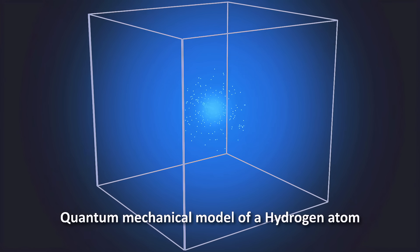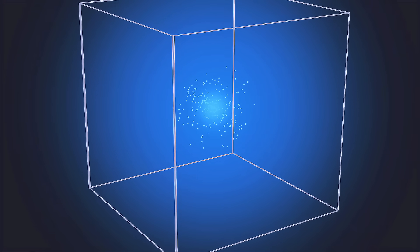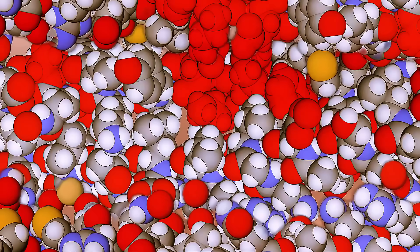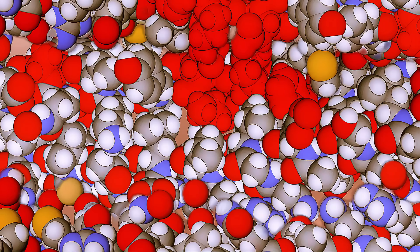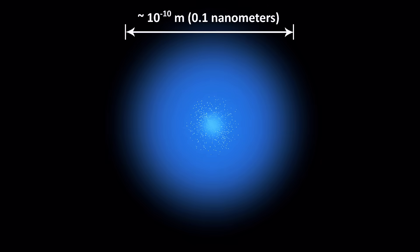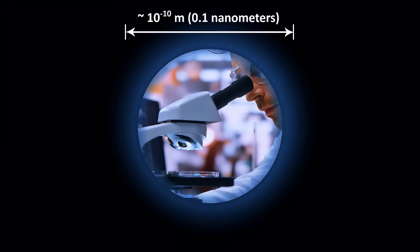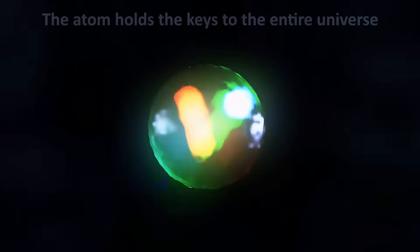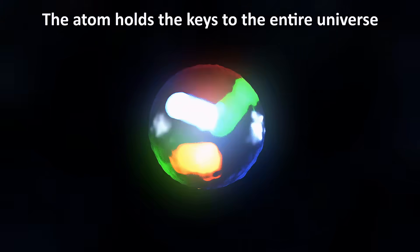Atoms are mind-bogglingly small. For perspective, a single human hair is about a million atoms wide, carbon atoms. Atoms are so small they are invisible even to the most powerful optical microscopes, because they are smaller than the shortest wavelength of visible light.